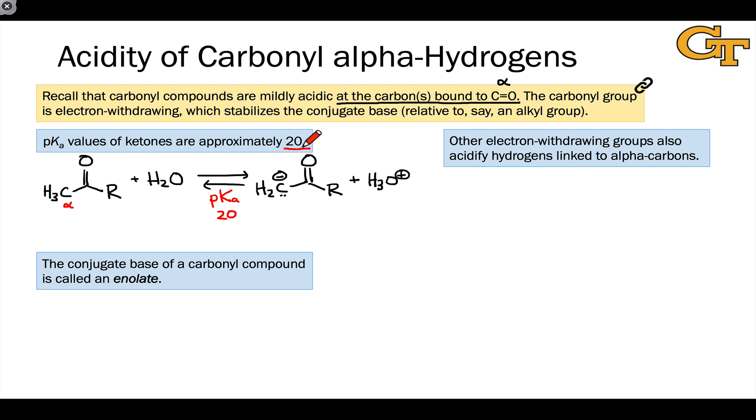Another thing to note is that this is much much lower than the pKa value of a simple alkane, which is up around 45 or 50 or even larger. The alpha carbons of carbonyl compounds then are much more acidic than alkanes. And the reason for this has to do with resonance stabilization of the conjugate base. This is a resonance effect.